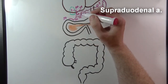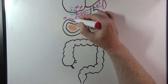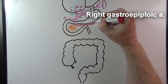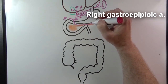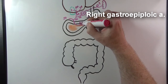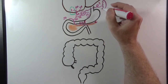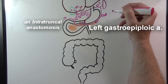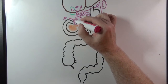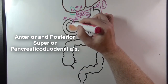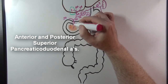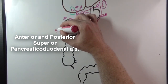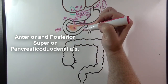The supraduodenal artery goes to the superior portion of the duodenum. The right gastroepiploic artery, a continuation of the gastroduodenal artery, runs along the greater curvature of the stomach, where it anastomoses with the left gastroepiploic artery branching off the splenic artery. We also draw the superior pancreaticoduodenal arteries — both anterior and posterior — which will anastomose with branches from the superior mesenteric artery.